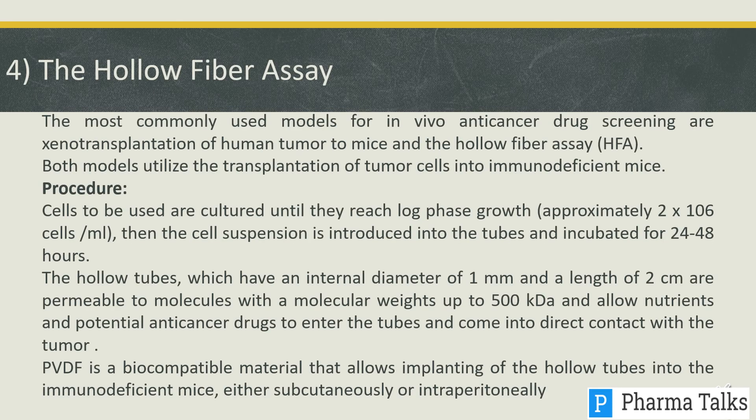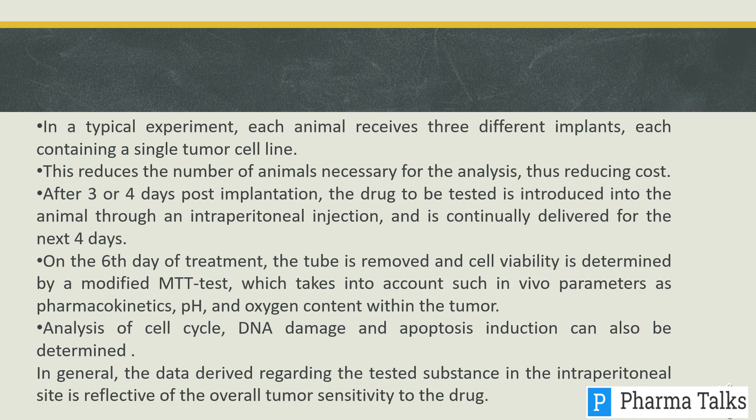The hollow fiber assay (HFA) is one of the most commonly used models for in vivo anti-cancer drug screening, along with xenotransplantation of human tumors to mice. Cells to be used are cultured and the suspension is introduced into tubes and incubated for 48 hours. The hollow tubes are permeable and allow drugs to enter and come into direct contact with the tumor. PVDF, a biocompatible material, allows implanting of the hollow tubes into immunodeficient mice either subcutaneously or intraperitoneally. In a typical experiment, each animal receives three different implants, each containing a single tumor cell line, reducing the number of animals necessary and thus reducing cost.